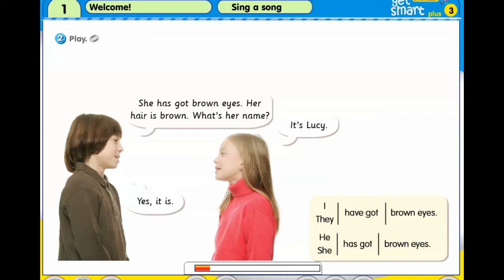Activity 2 Play. She has got brown eyes. Her hair is brown. What's her name? It's Lucy. Yes, it is.